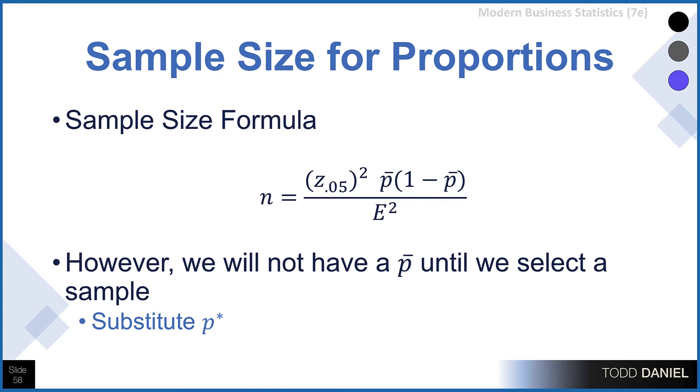Well, the problem is we're not going to have a sample proportion until we have a sample. So we can use a planning value for this as well. How do we get that planning value, which we'll substitute as P asterisk?